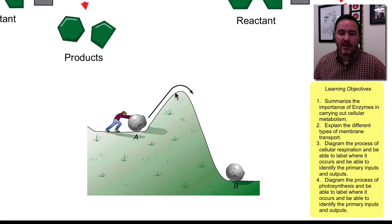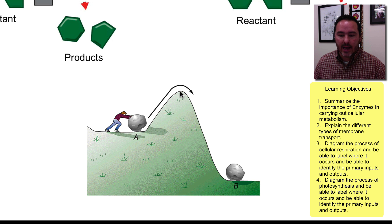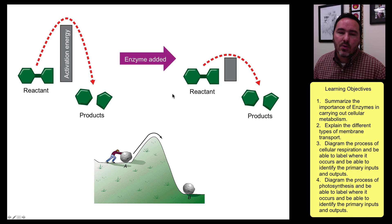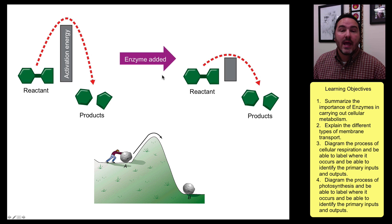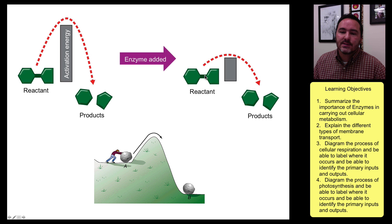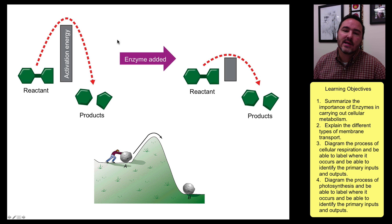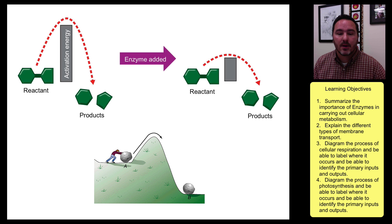A lot of times this is described as pushing a boulder up a hill. It takes a lot of energy to push the boulder up this really high hill, but once you do, it'll roll down and settle at position B. So in our bodies, in order to be more efficient, we use enzymes, which are special proteins that have the ability to lower the activation energy. The reactants can go from reactants to products without needing so much energy — that's the major important role of enzymes in our bodies.